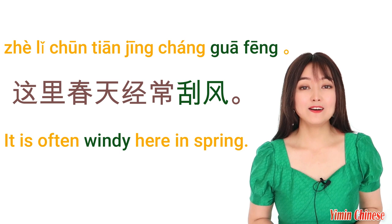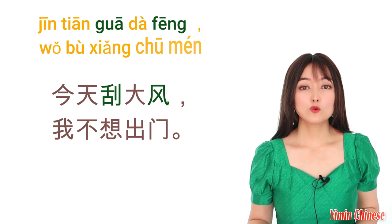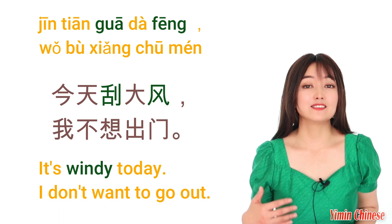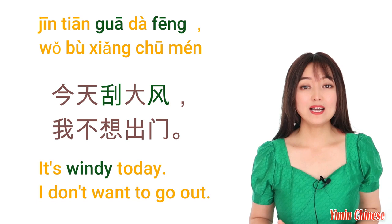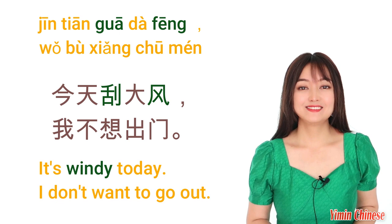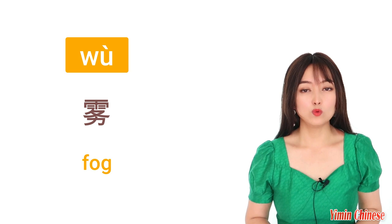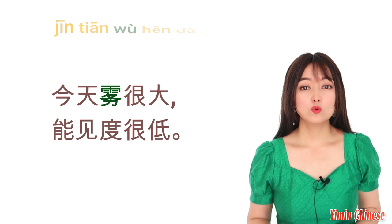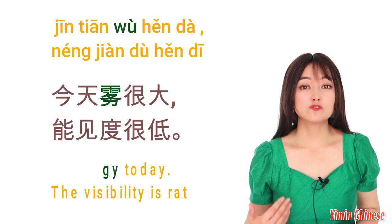Another sentence: 今天刮大风，我不想出门。There is a strong wind today, I don't want to go out. 好的，我们还有foggy days. Fog is 雾。比如说，今天雾很大，能见度很低。It's foggy today, the visibility is rather low.